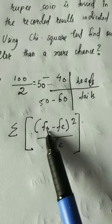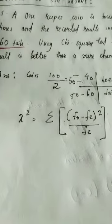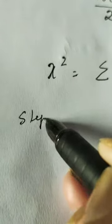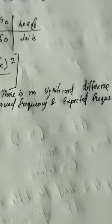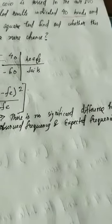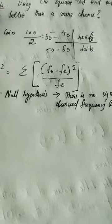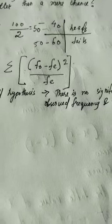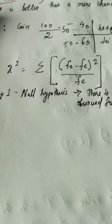We have found the observed frequency and expected frequency for head and tail. But before formulating the formula, the first step is to establish a null hypothesis. The null hypothesis states that there is no significant difference between the observed and expected frequency — that the result of 40 heads and 60 tails occurred merely by chance.